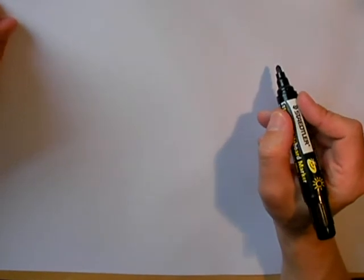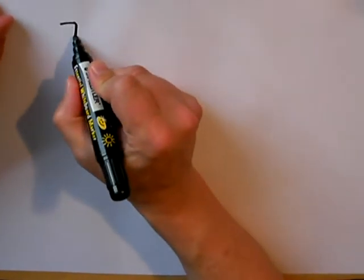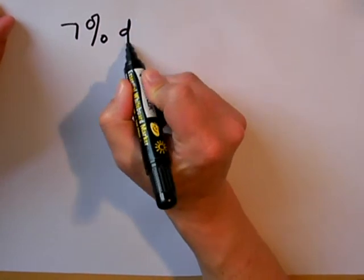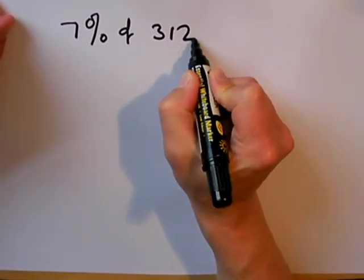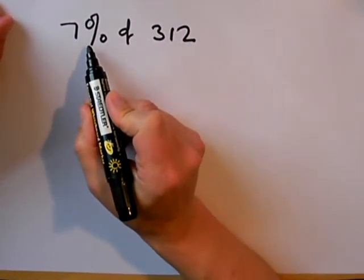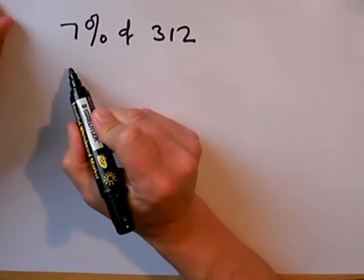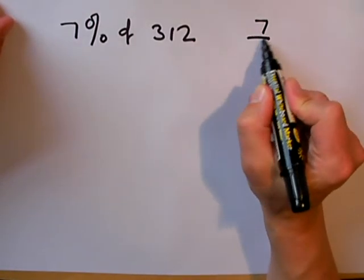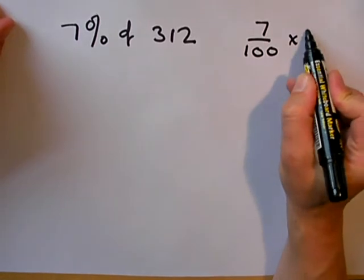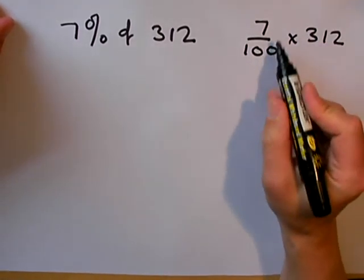Here's a few more examples. 7% of 312. Now, 7% can either be written as a fraction, 7 out of 100 multiplied by 312, or as a decimal.